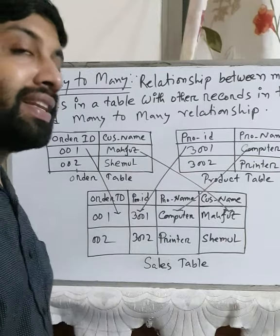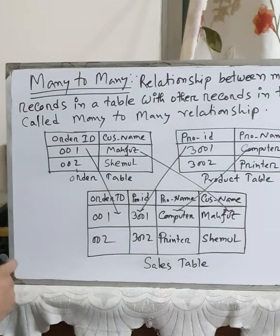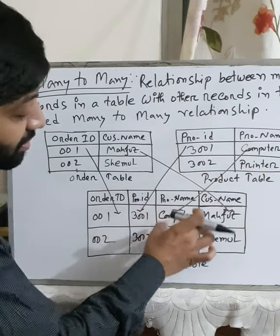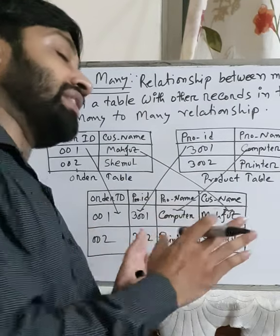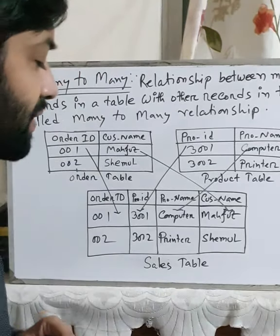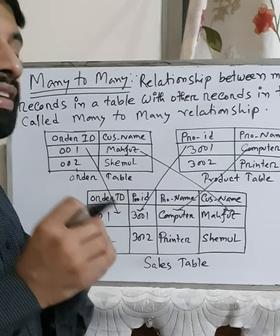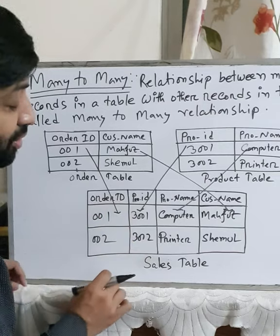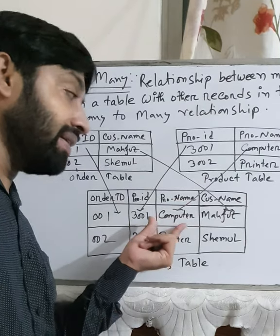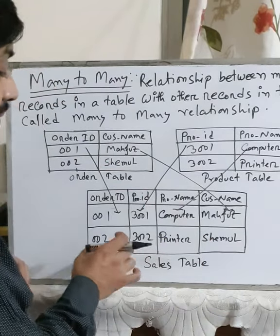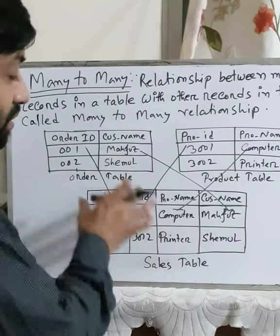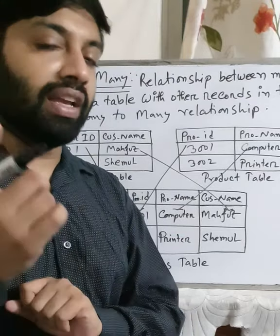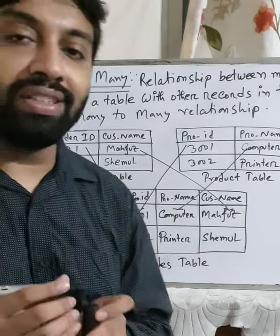In the junction table — which we can call a Sales Table — you have Order ID and Product ID from the respective tables, along with Product Name and Customer Name. For example, Order ID 001 with Product ID 3001 corresponds to a computer purchase. Different information from different tables comes together in this final table to give complete information. This is the many-to-many relationship between multiple tables.